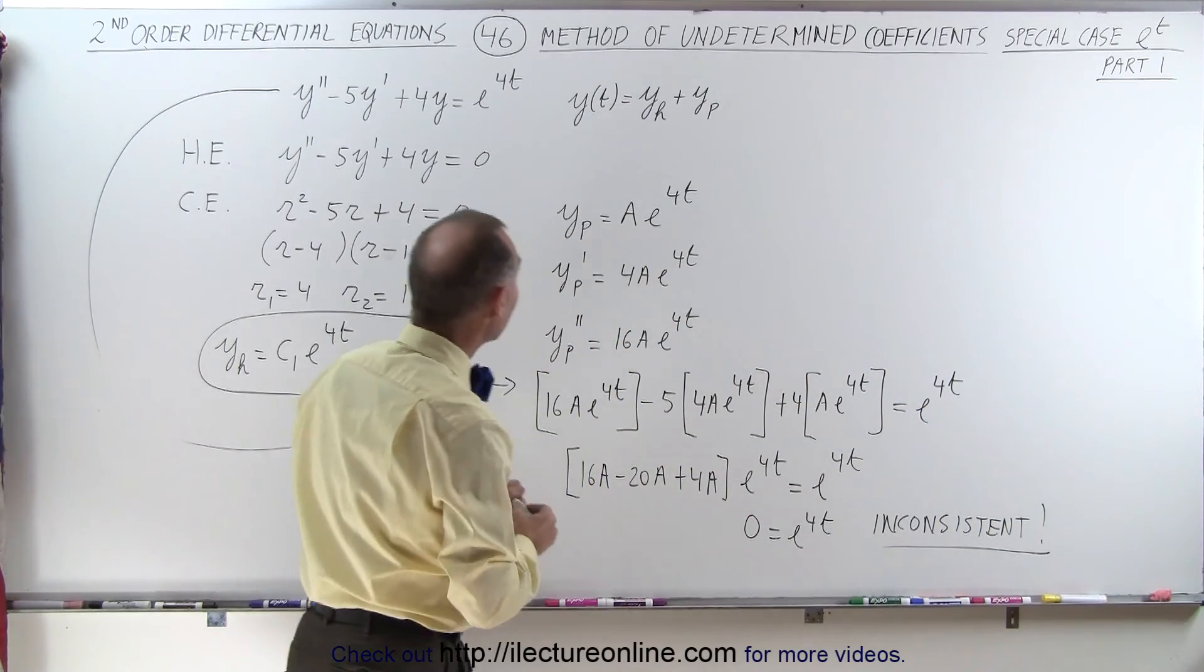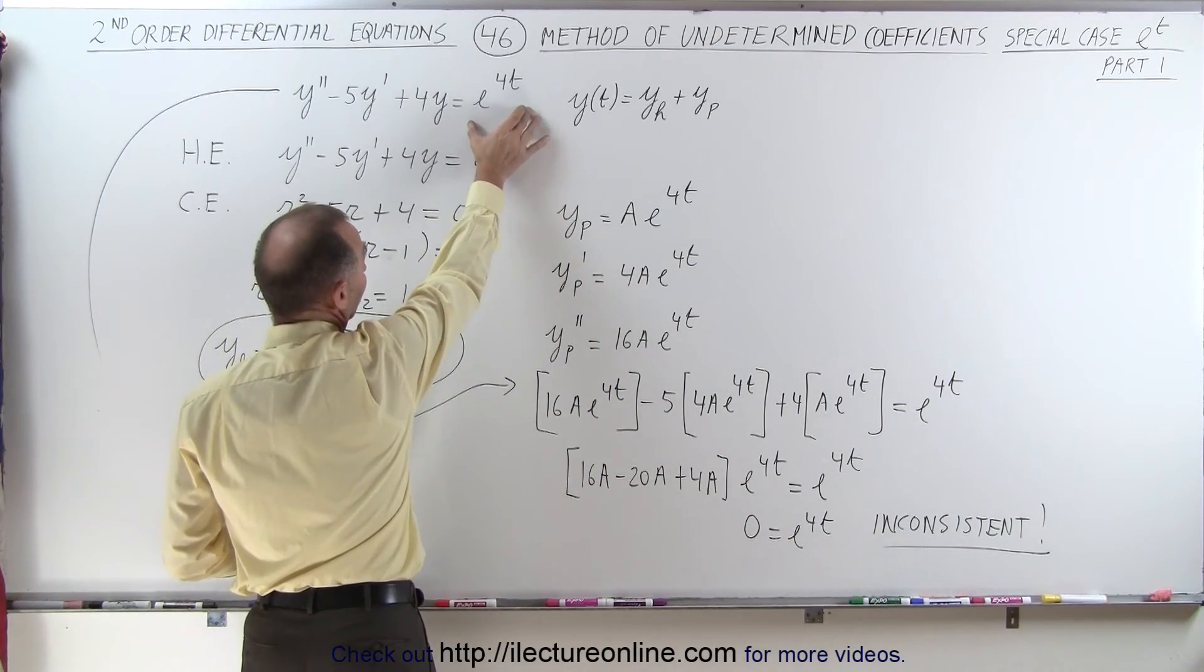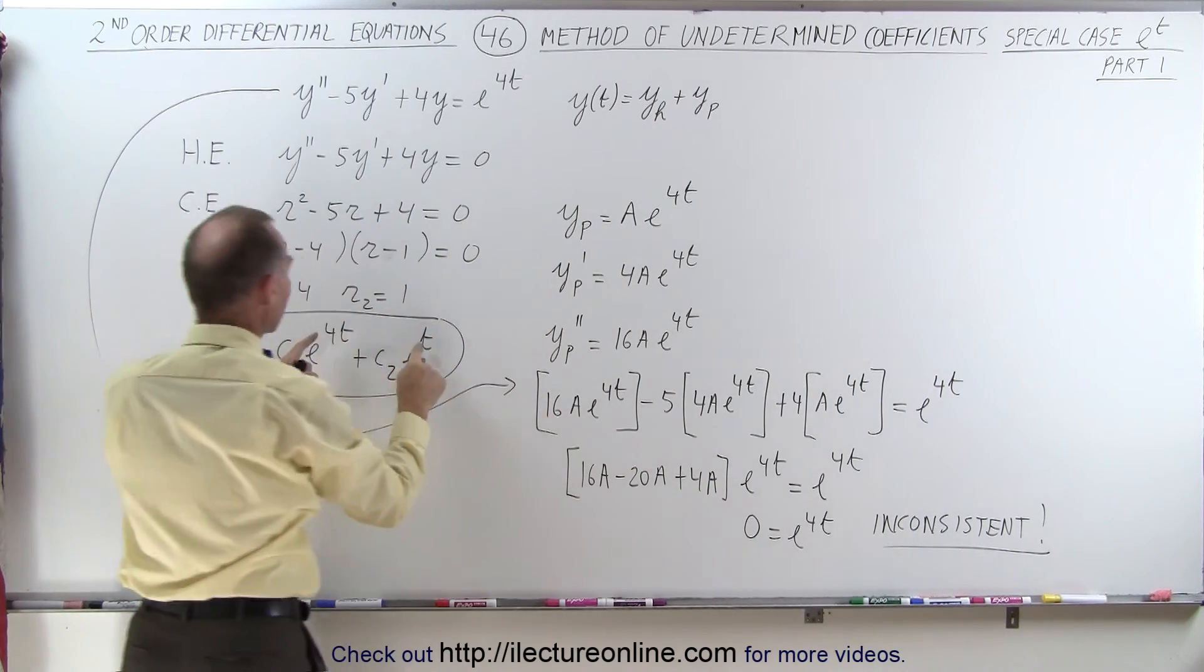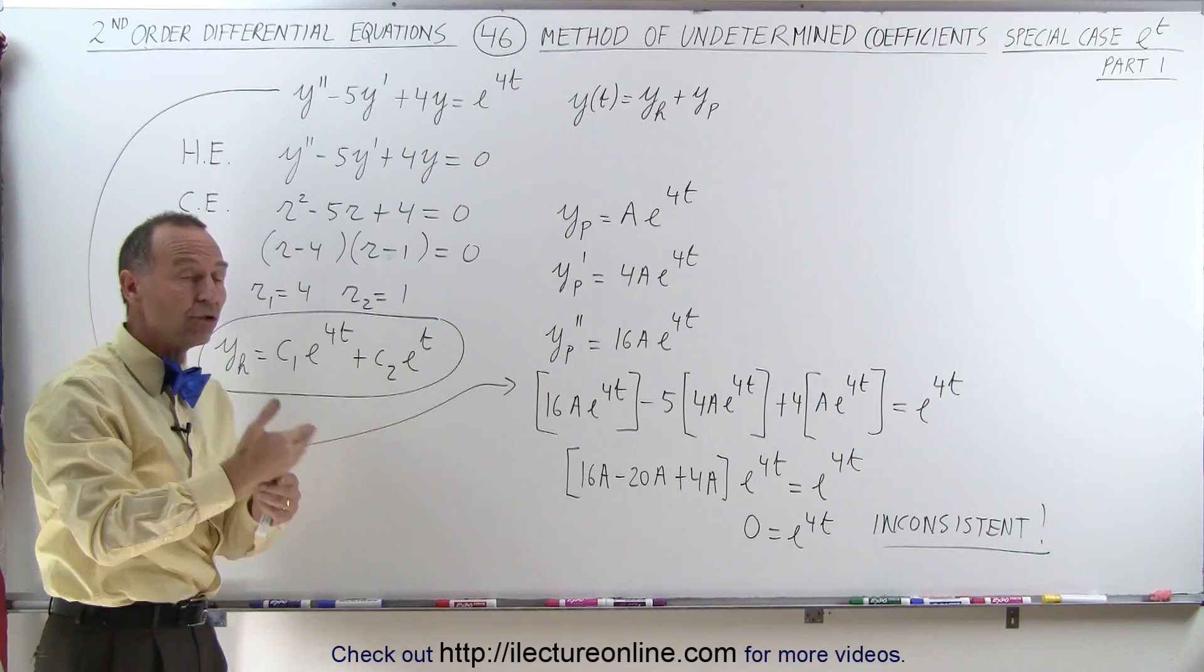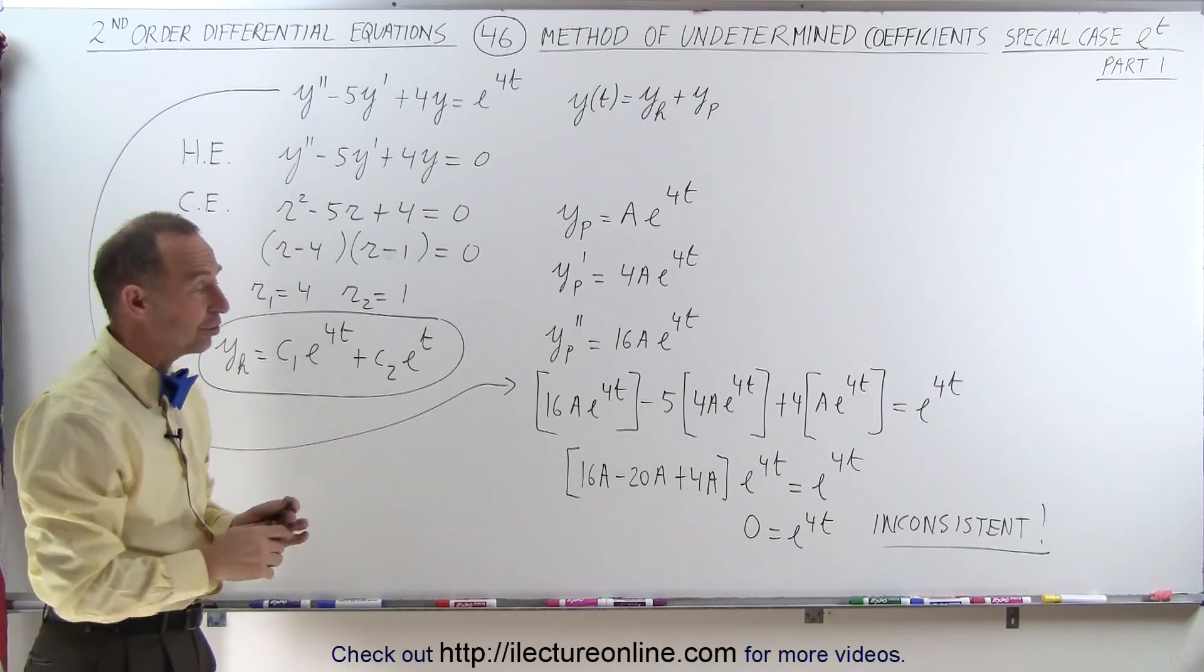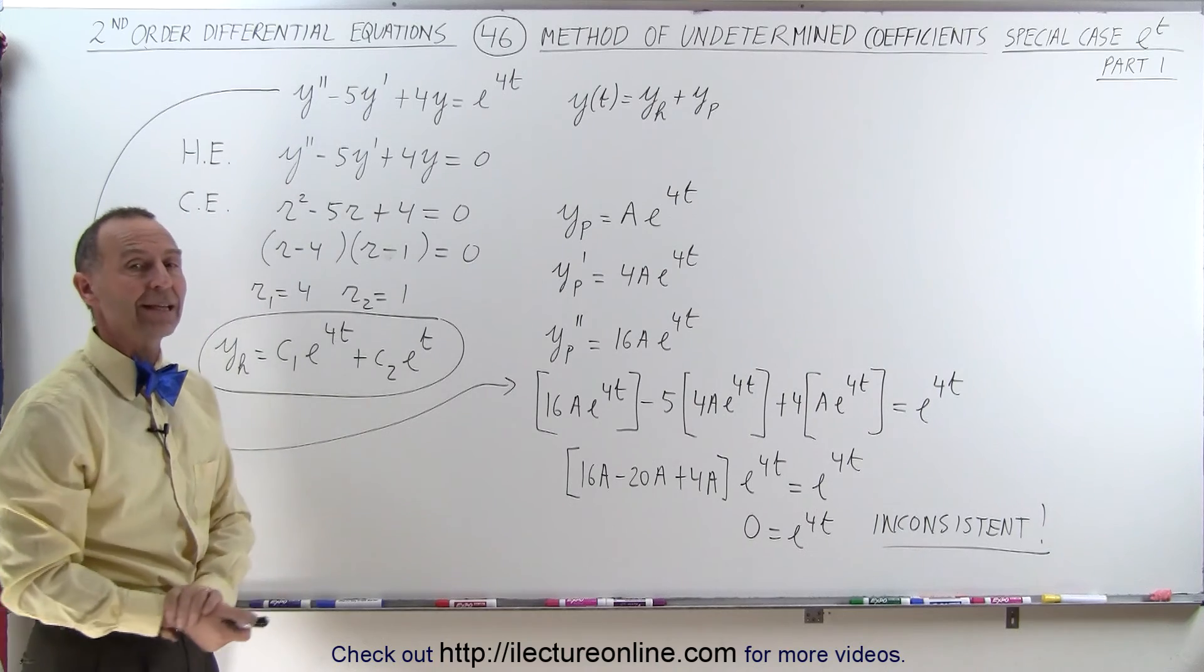In other words, whenever you have a function on the right side, the g of t, with an exponent that is the same as one of the exponents in the homogeneous part of the solution, you cannot find the undetermined coefficient using this particular technique.